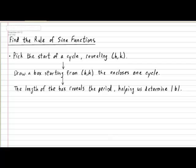The height of the box can help us determine the value of the absolute value of a. Keep in mind that in a sine function the height of the box surrounding one cycle corresponds to double the amplitude. Therefore the amplitude itself corresponds to half the height of the box.